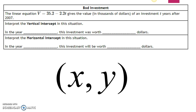We all know the basics. We all know that in an ordered pair, like this big ordered pair we see at the bottom of the screen, the first value of the ordered pair represents the x variable and the second value of the ordered pair represents the y value.